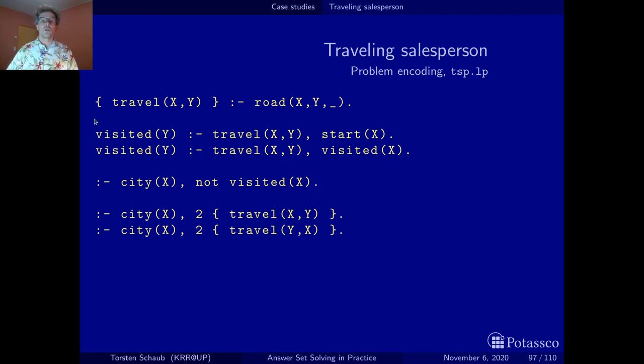So in this way we get all the nodes that can be visited from the starting node by following the travel suggested by our solution candidate. The key idea is actually to add this integrity constraint that says it must not be the case that there is a city that is not visited. And notably, this includes the starting node.